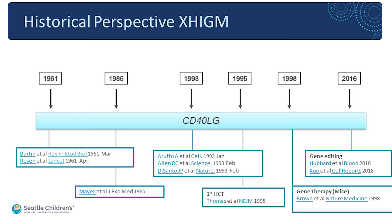In 1993, a wonderful thing happened: three groups published the genetic defect for X-linked hyper-IgM. The gene was first called GP39 but is now termed the CD40 ligand gene. These groups were from both the U.S. and Europe. Among the U.S. group, one of our colleagues was an important participant, and the group in Seattle and subsequently Troy Turgeson were key describers of this condition.